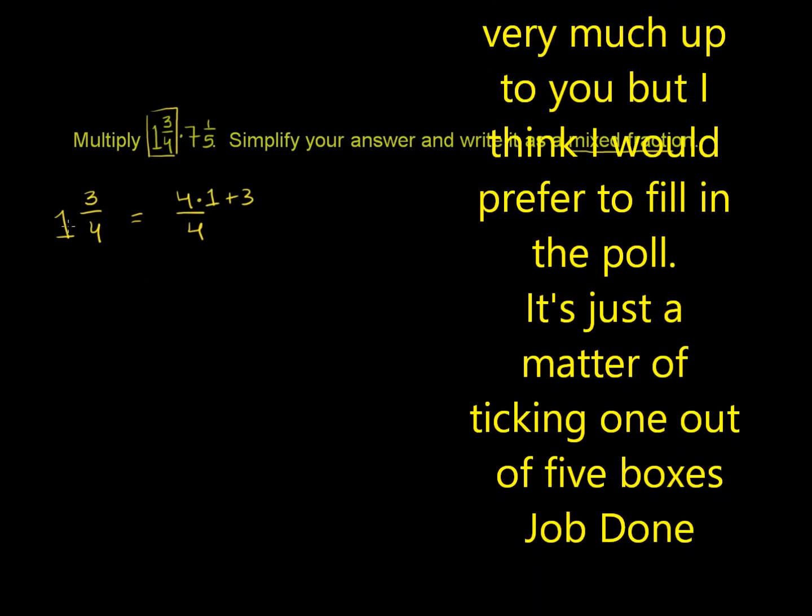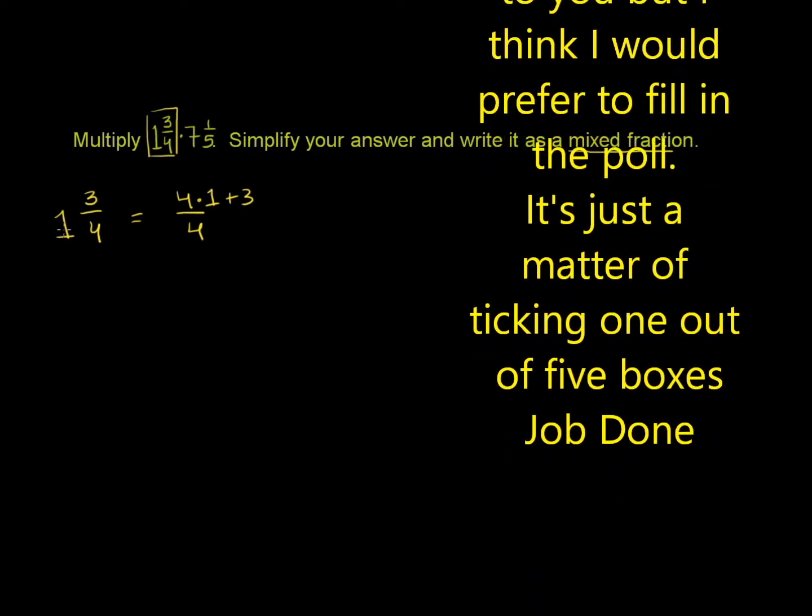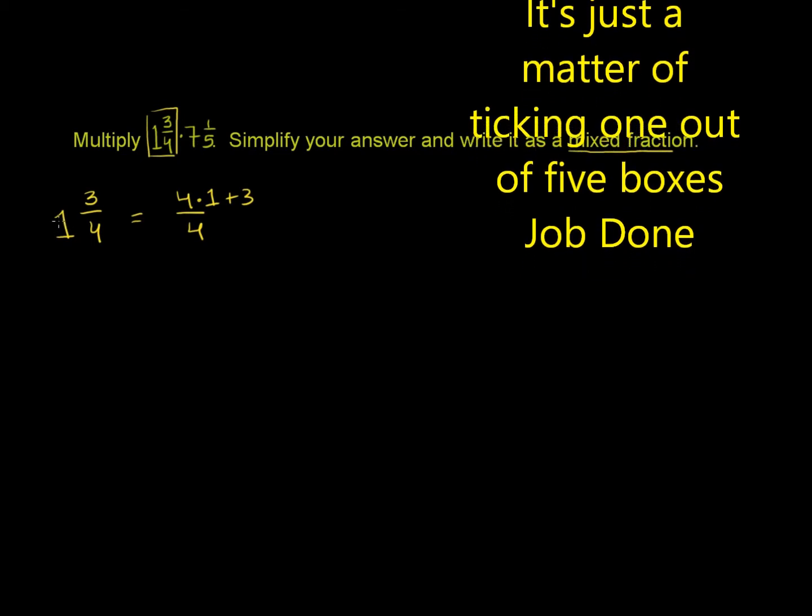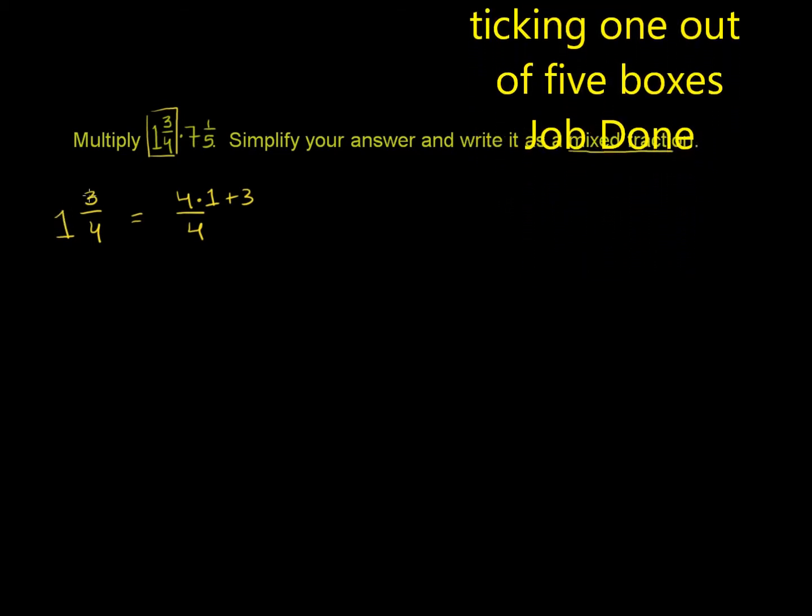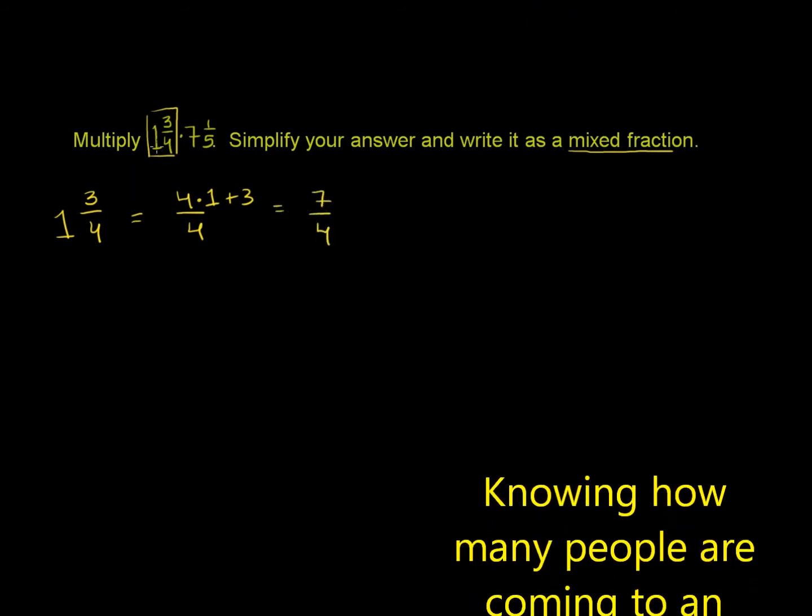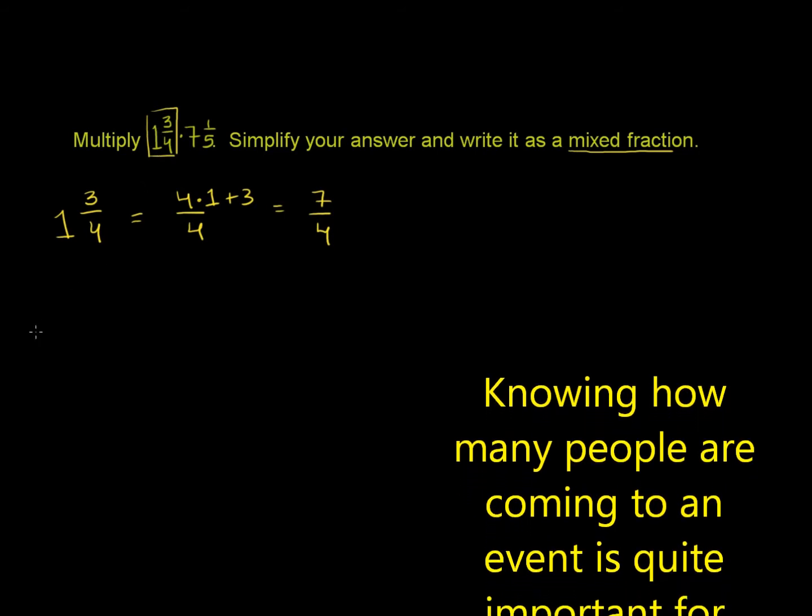And the reason why this makes sense is 1 is 4/4, or 1 is 4 times 1/4, right? 1 is the same thing as 4/4. And then you have 3 more 4ths. So 4/4 plus 3/4 will give you 7/4. So that's the same thing as 1 and 3/4.